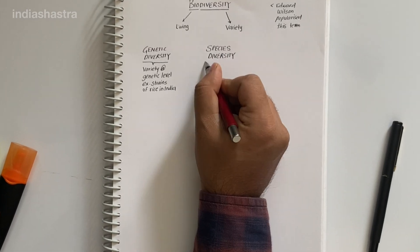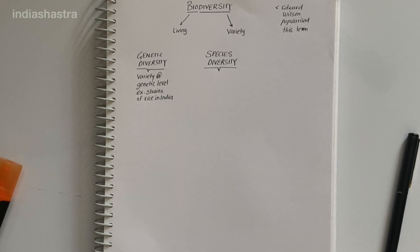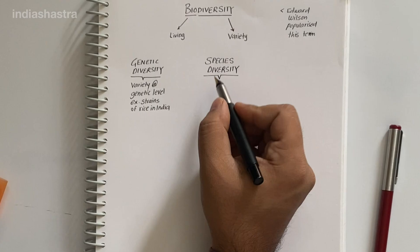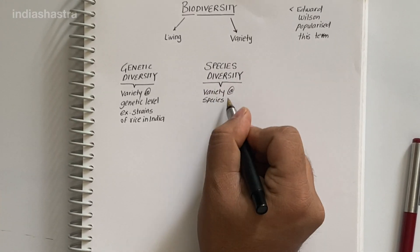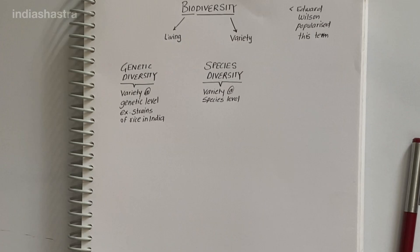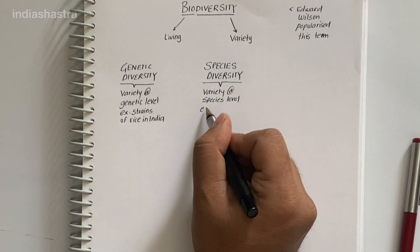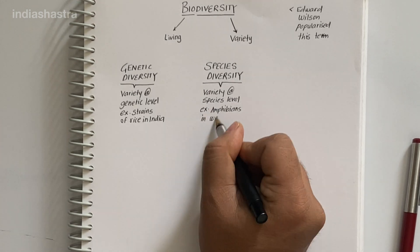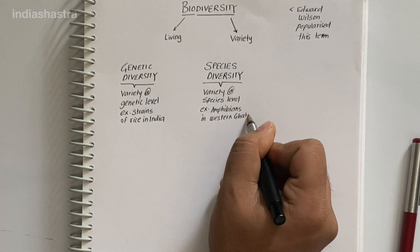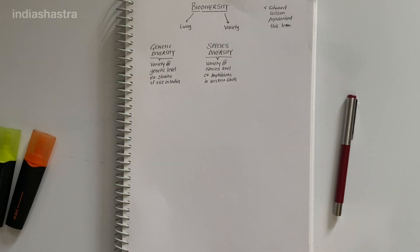Species diversity is the diversity at species level. For example, Western Ghats have a greater amphibian species diversity than Eastern Ghats.